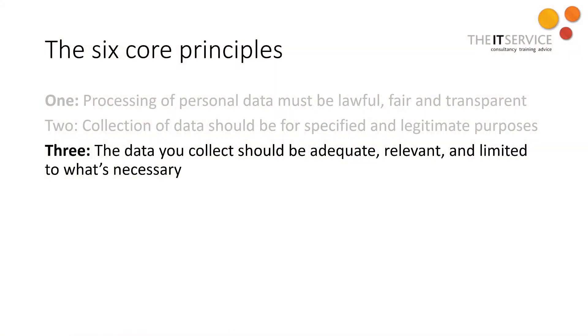Principle 3 says that the data you collect should be adequate, relevant and limited to what's necessary. So you've got a purpose for collecting data — now you have to collect all that you need, but only what you need in order to fulfill that purpose. Don't ask for my gender if you don't need it. Don't ask for my favorite newspaper unless you really can't do without that information. The data has to be adequate for its purposes, as well as limited to what's necessary.